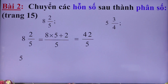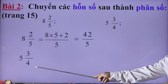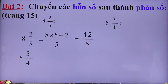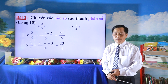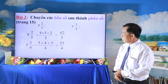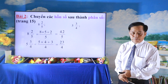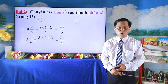Bài thứ 2: 5 và 3/4. Ta lấy phần nguyên là 5 nhân mẫu số là 4, cộng tử số là 3, ghi ở tử. Còn mẫu số giữ nguyên. Kết quả là 23/4. Thầy chúc mừng các em có kết quả đúng. Các em đã làm xong bài tập số 2, chuyển hỗn số thành phân số.